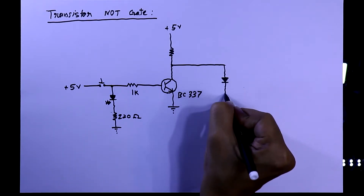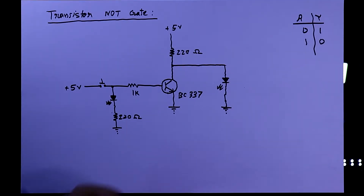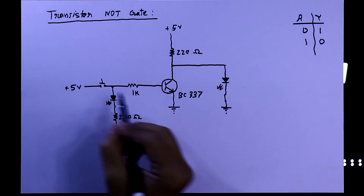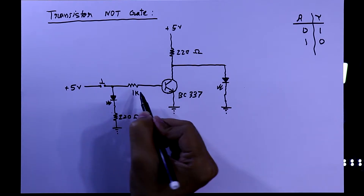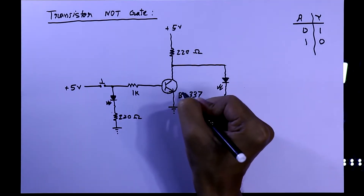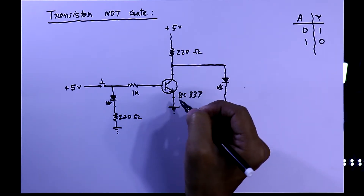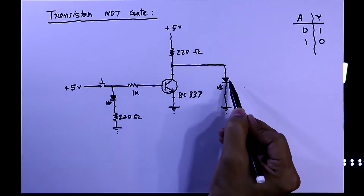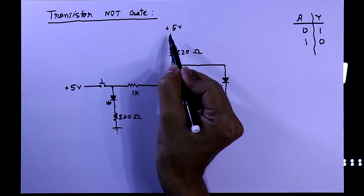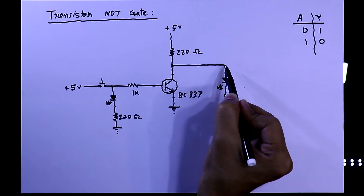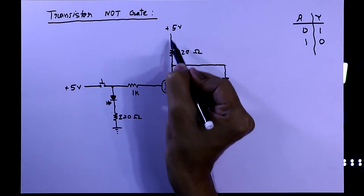To see the output, we are connecting an LED. Now we will see the working of the circuit. When the switch is off, no current flows through the switch, through the input LED, or through the resistor. In this condition there is no connection between collector and emitter — the transistor is open. We can see that the output LED is glowing because 5 volts is connected and current is flowing through the resistor and then through the LED to ground.